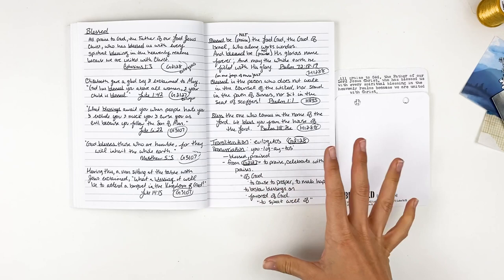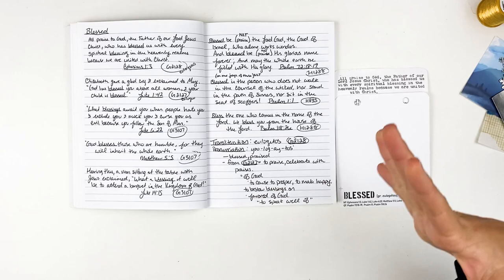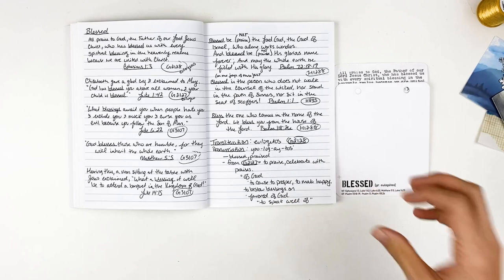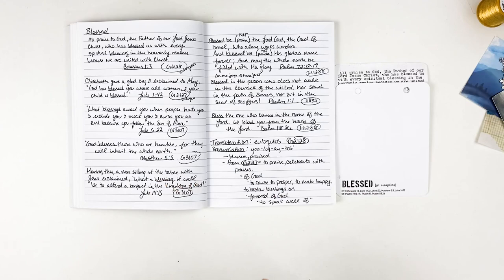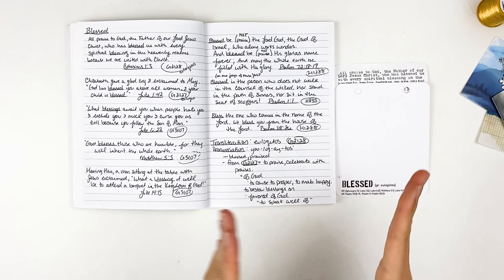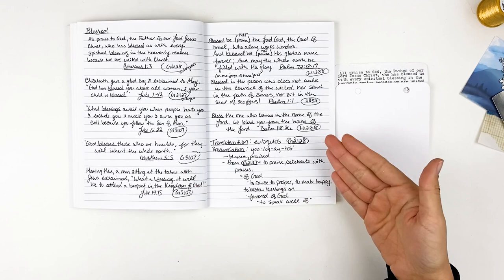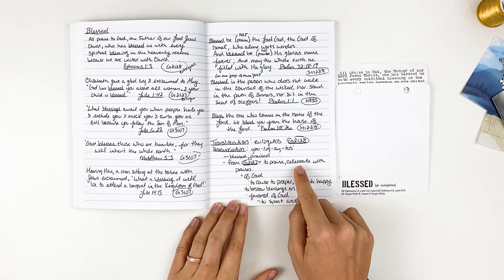So the Strong's Concordance number for that is going to be G2128. I've got the pronunciation there, basic definition, blessed or praised. But it's from the word G2127, which is eulogeo, the root word. It says to praise, celebrate with praises. So thinking praise. Now, I don't know about you, but when I think blessed or a lot of people think blessed as being tangible, physical things, right? God blessed me with a family, a job, a car, a house.